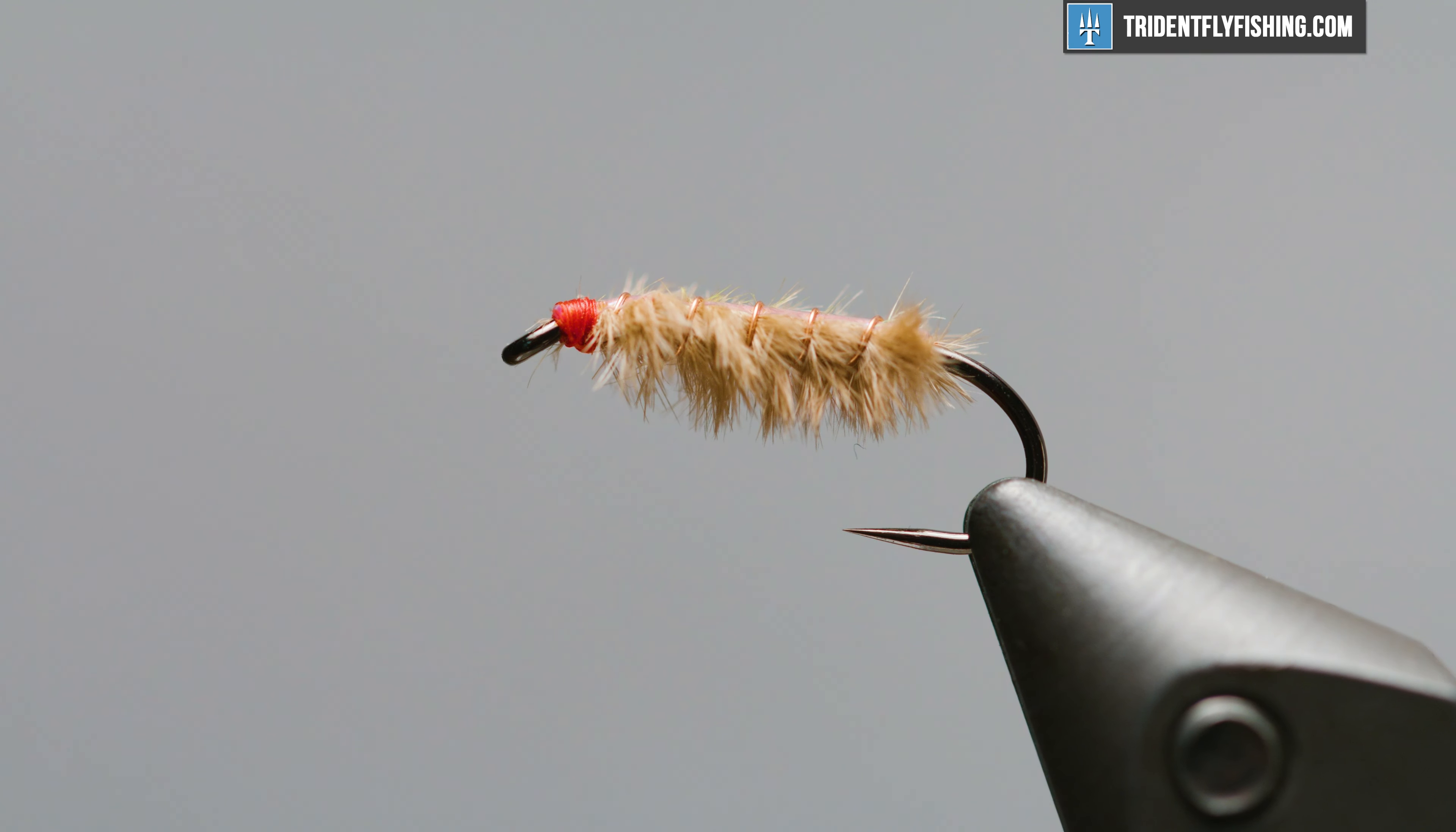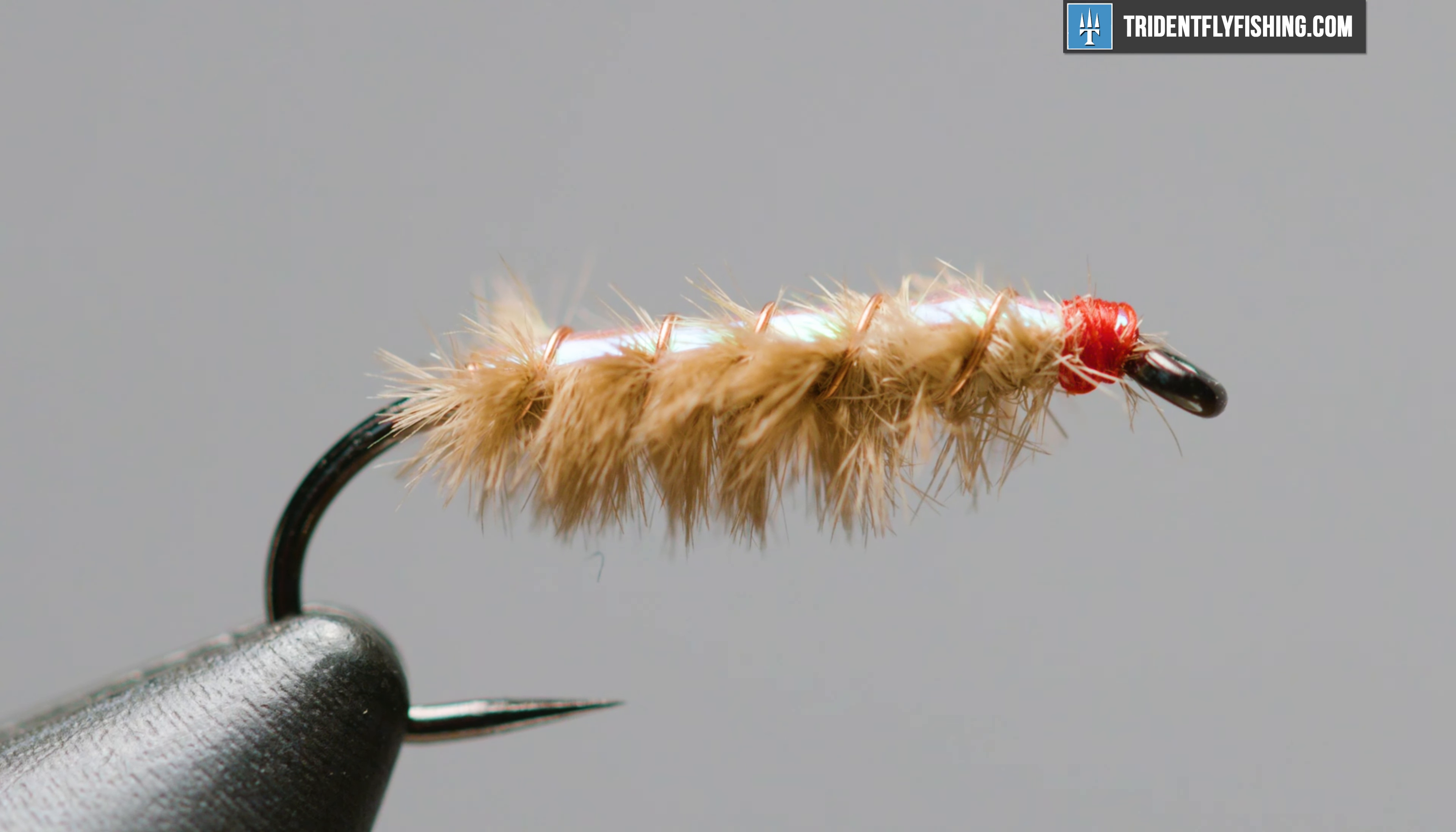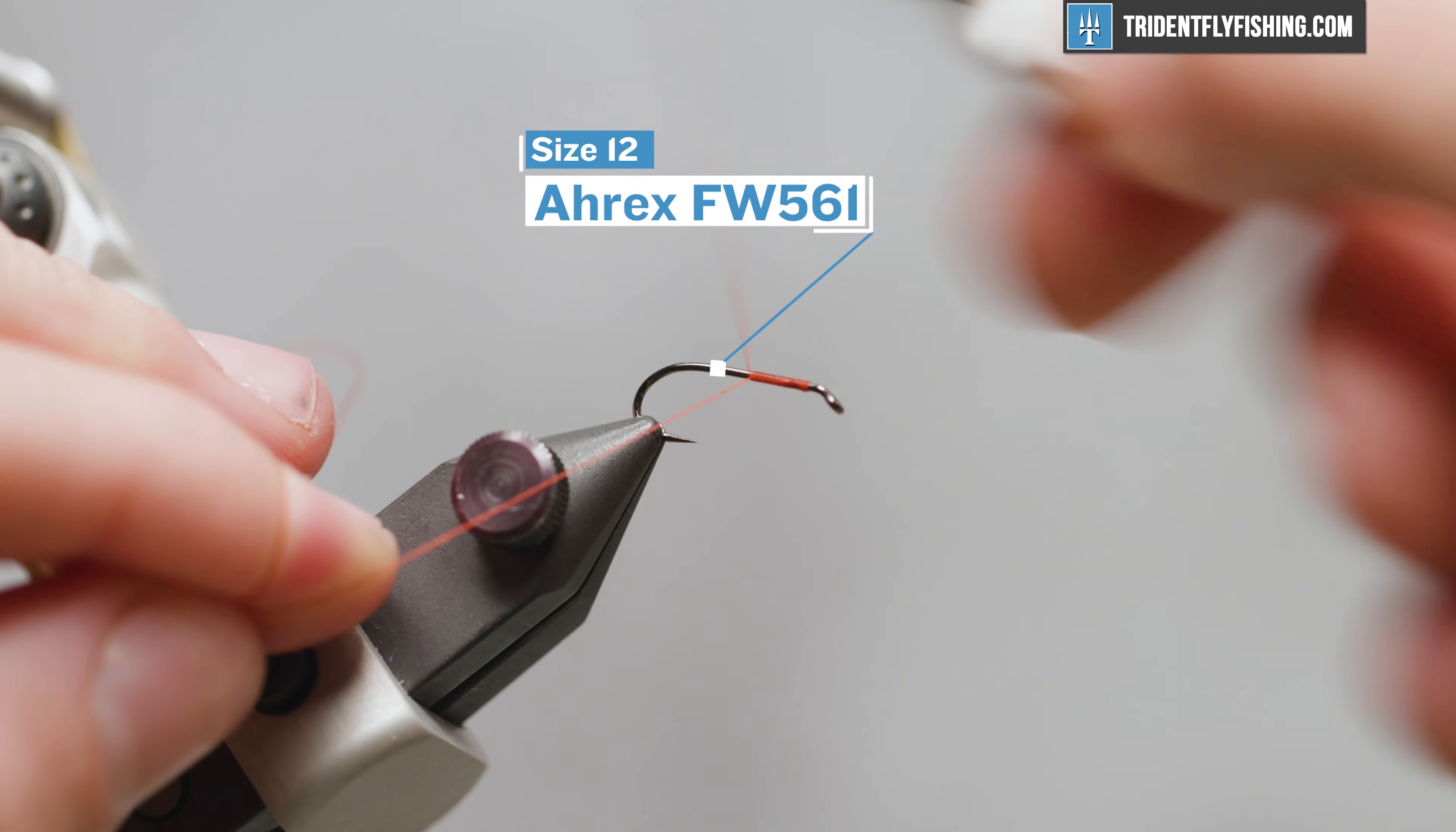Anywhere you'll find those populations, this fly will get eaten. You can tie it in a ton of different sizes, probably a 10 all the way down to a 22 or so. But today we have a number 12 Arex FW 561 hook in the vise.